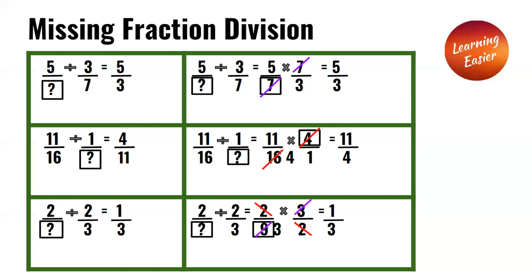2 over something divided by 2 over 3 is equal to 2 over something times 3 over 2, which is equal to 1 over 3. The two 2's cancel out. In order for the denominator of the answer to be 3, the missing number has to be 9, because when we simplify 9 and 3, 3 becomes 1 and 9 becomes 3.